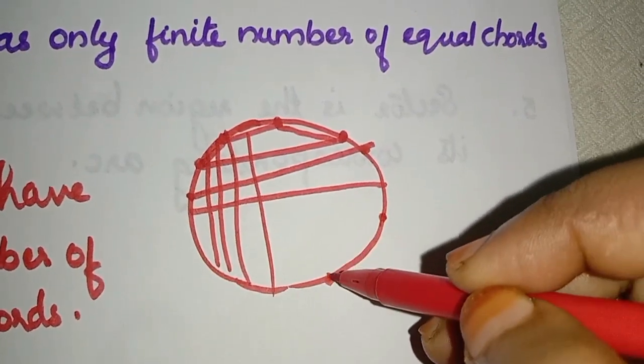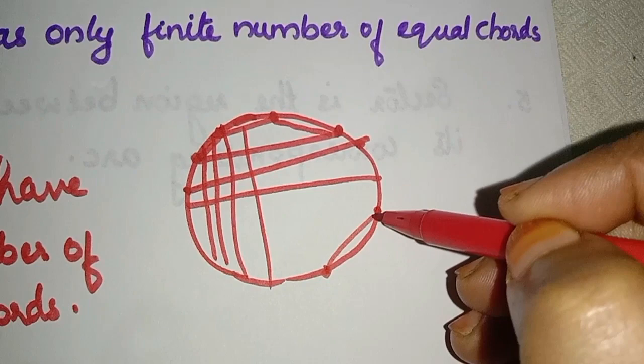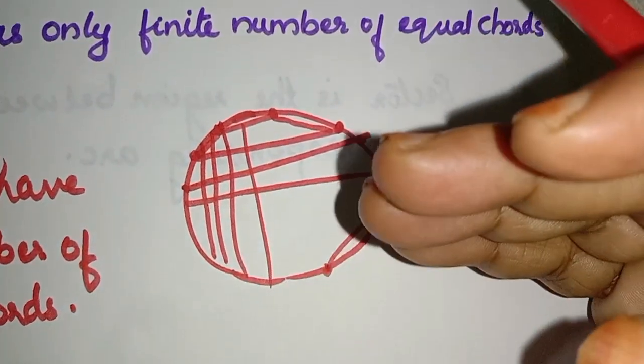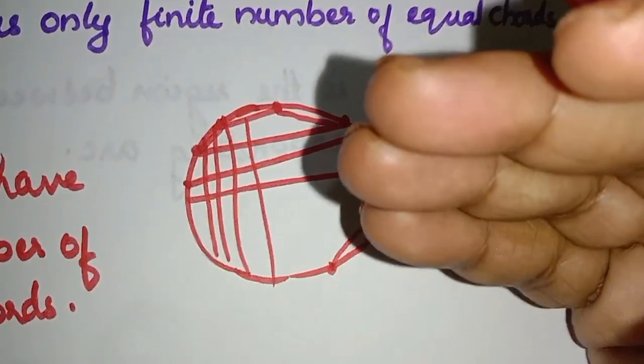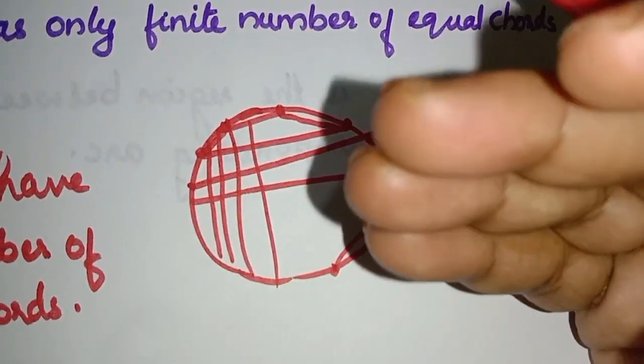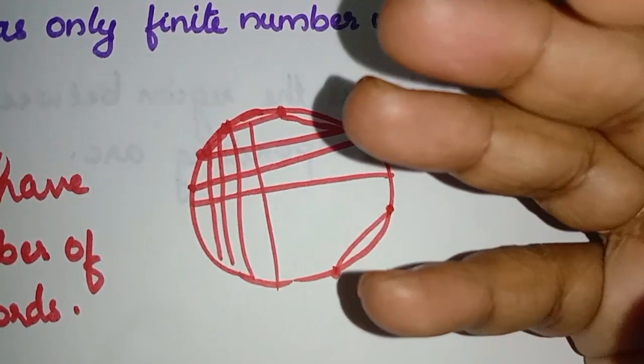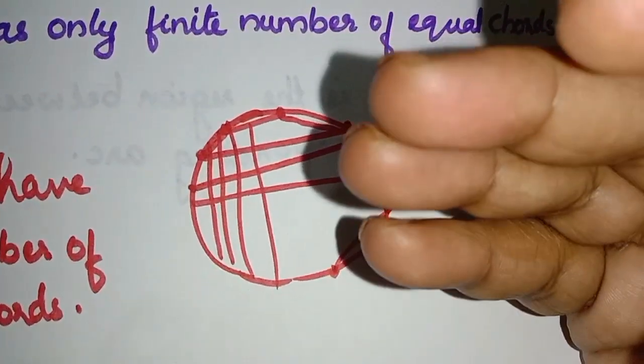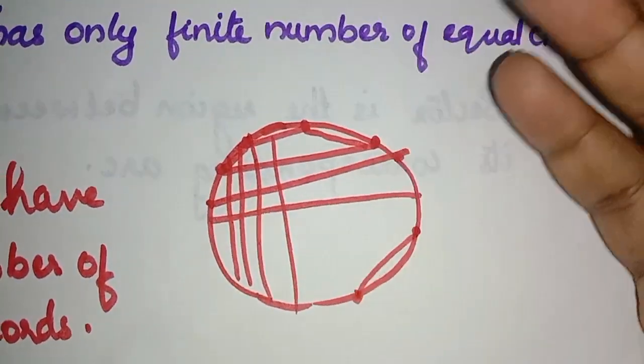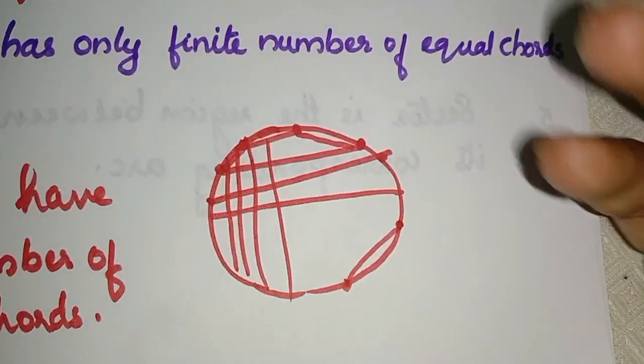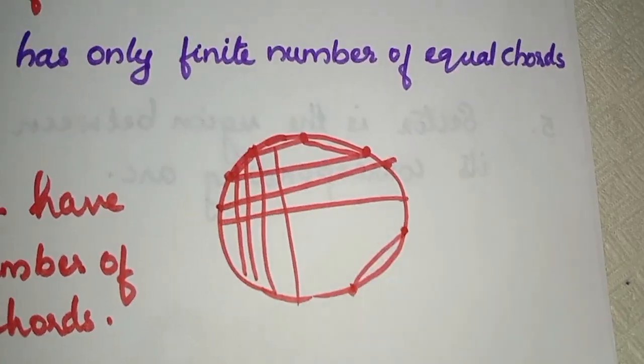Infinite means uncountable, right? Counting each of the chords, we can do that. So the answer is False — a circle has an infinite number of equal chords.